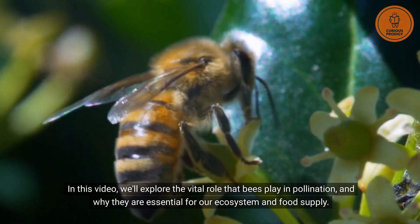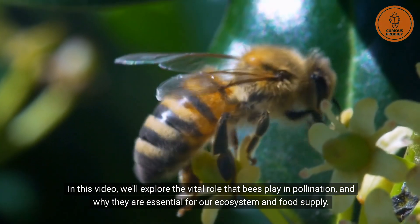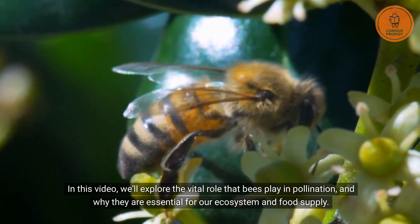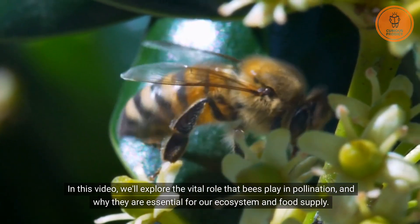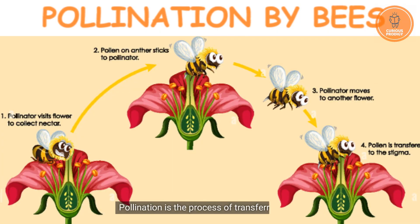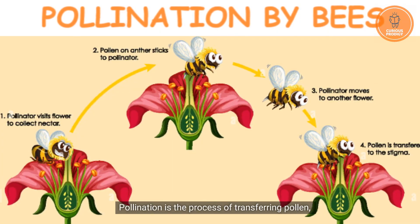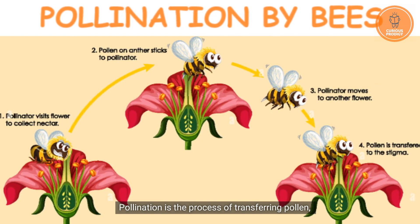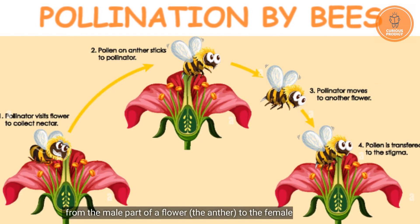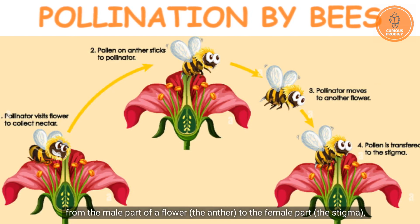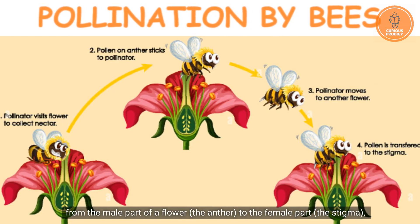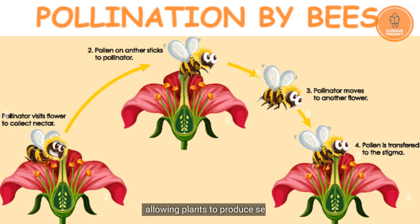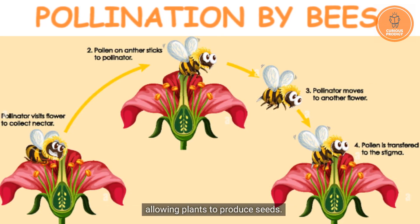Bees are essential for our ecosystem and food supply. Pollination is the process of transferring pollen from the male part of a flower — the anther — to the female part — the stigma — allowing plants to produce seeds.